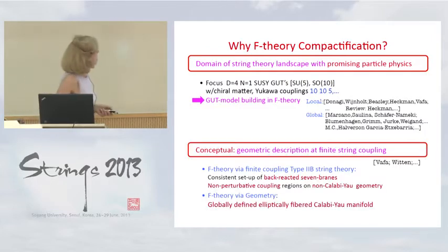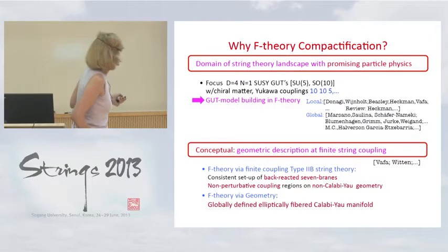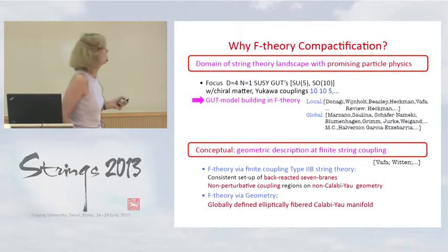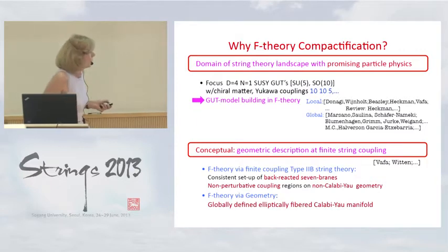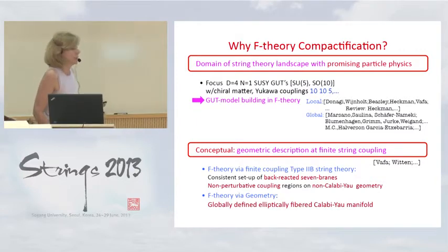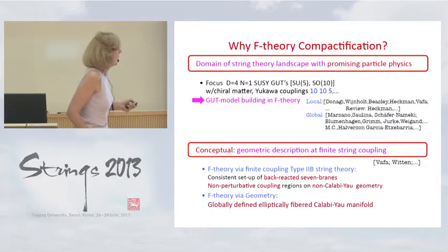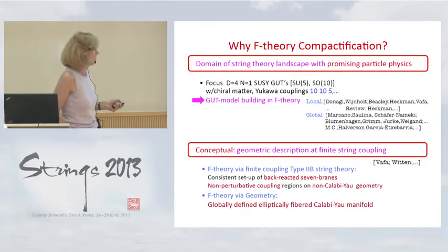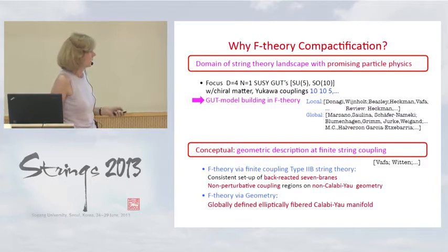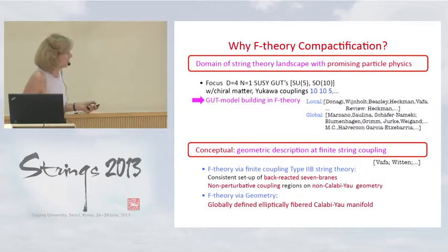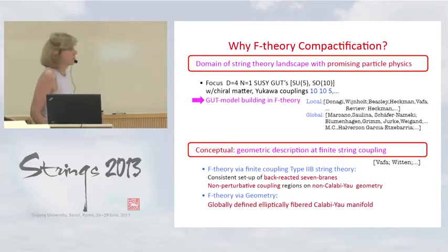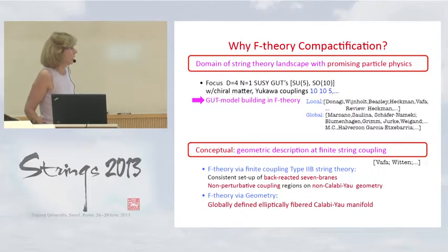The second motivation for F-theory is that it is conceptually intriguing because it allows us to study type IIB theory at finite coupling where seven-branes are accounted for completely, and as a consequence produces a beautiful geometrical description of compactification on elliptically-fibred Calabi-Yau manifolds.